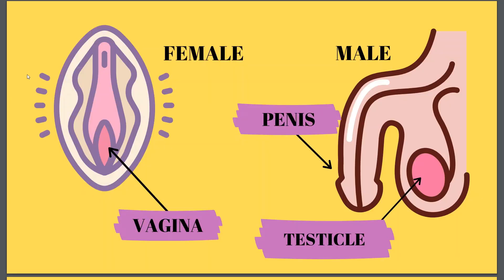What you see on the left side is the female reproductive body part and on the right side is the male reproductive body part. In the male reproductive body part there is a tube-like structure known as the penis, and there is a soft sack or bag-like structure behind the penis known as the testicle. In the female body part there is a small hole or opening just below the area where you urinate from, which is known as the vagina.